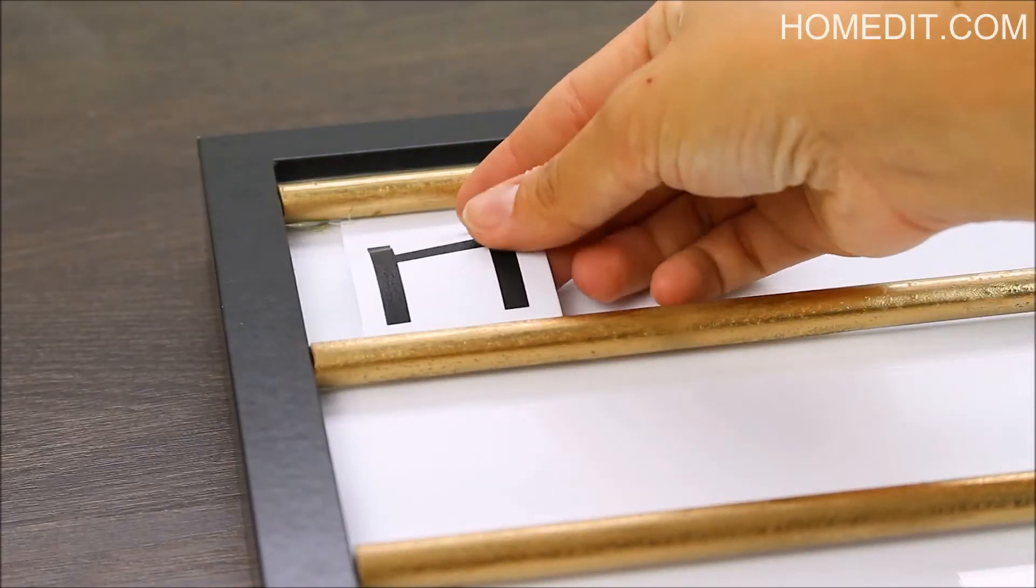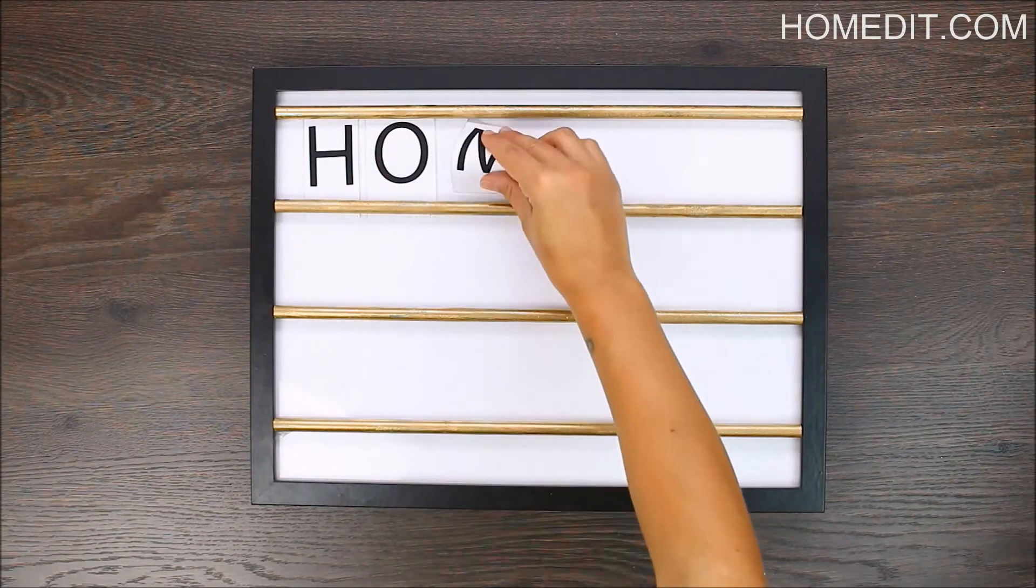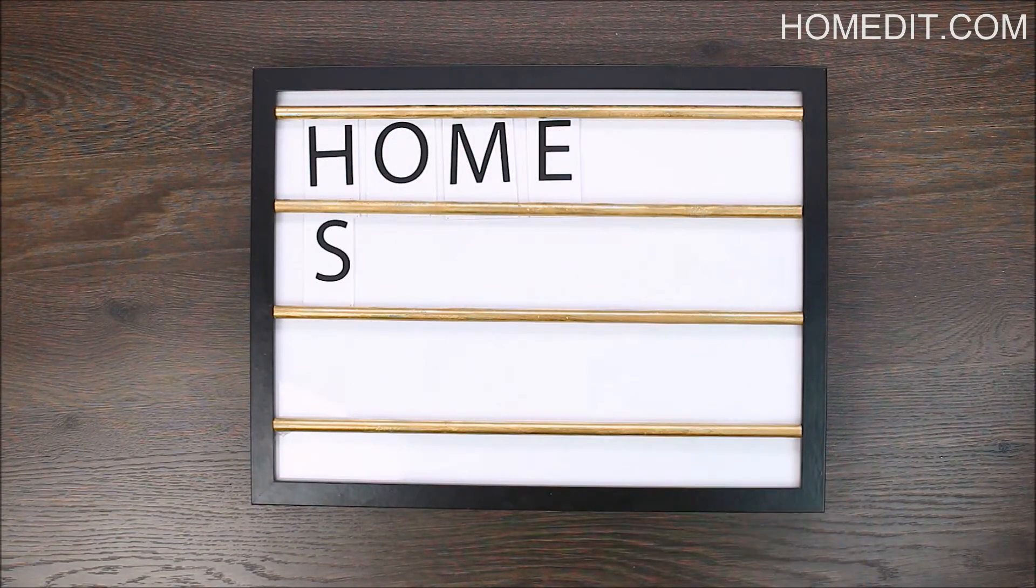Next, print and cut letters that spell out your favorite saying and place them within the tracks formed by the dowels. It's just like a big outdoor sign that uses track lettering.